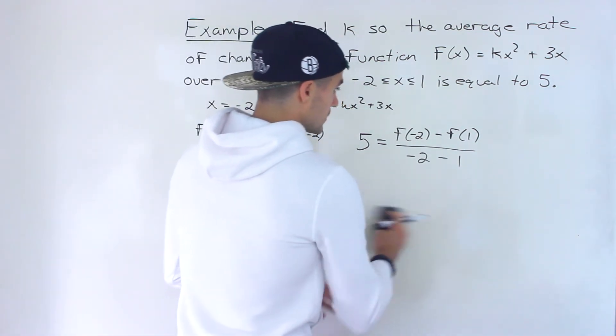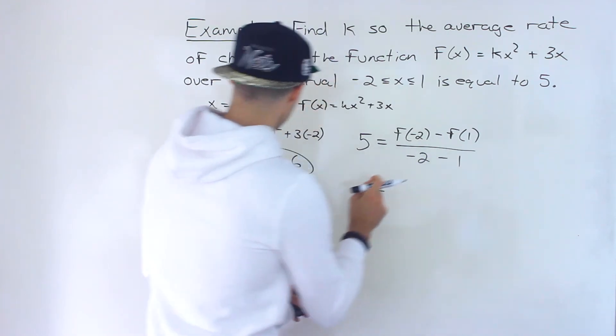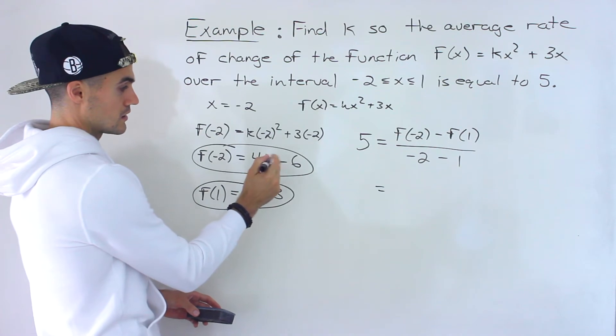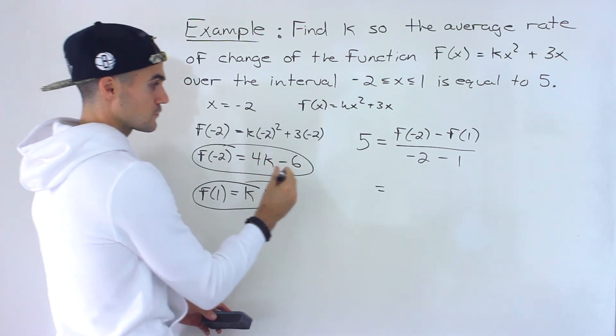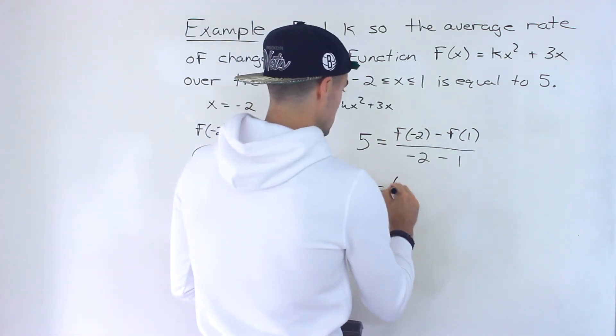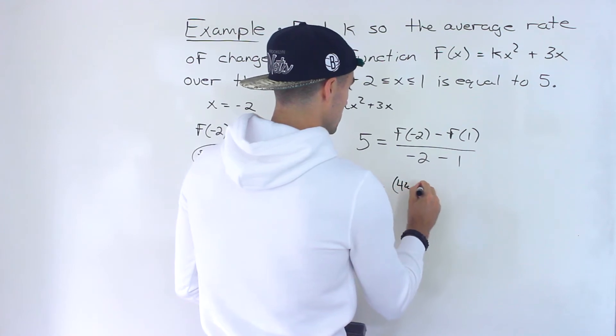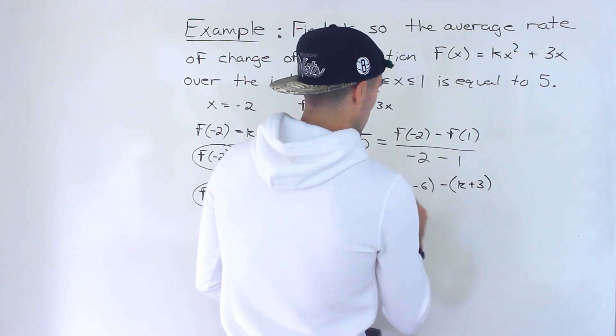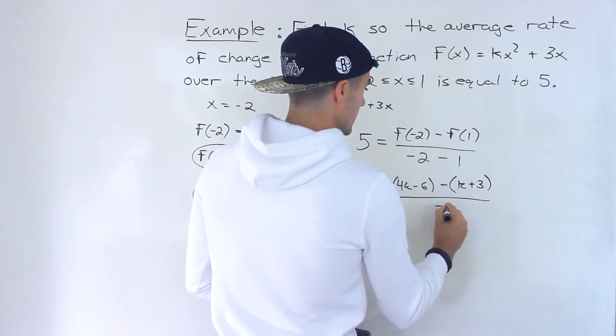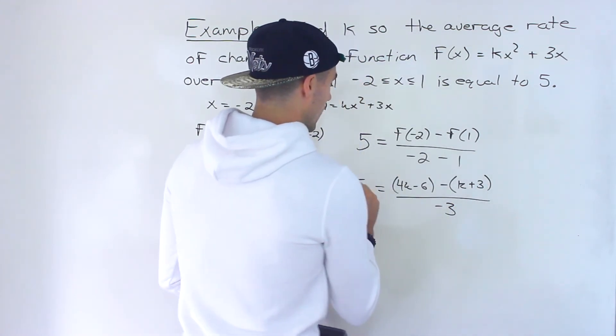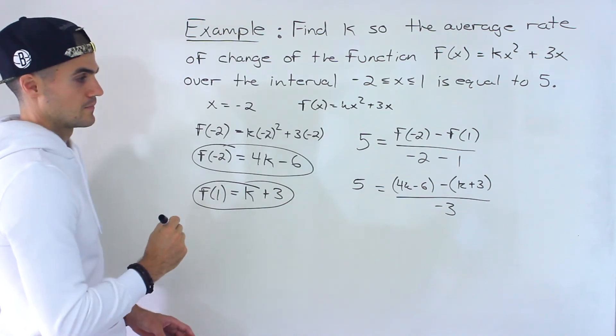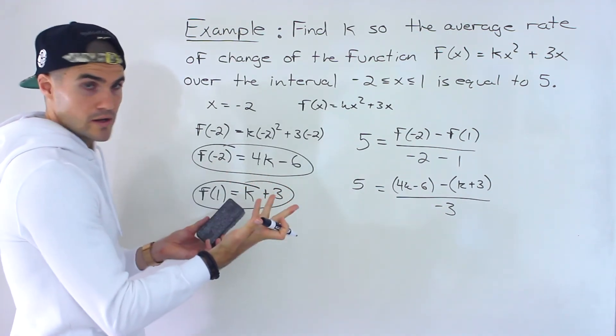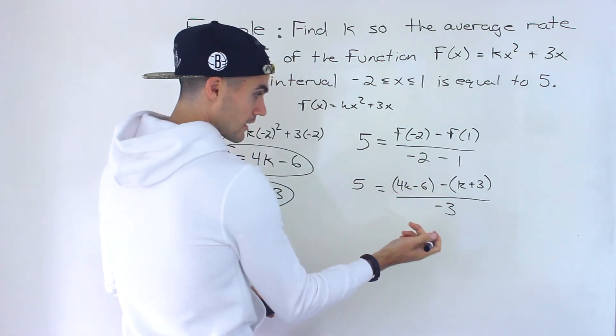From here, we can plug in f(negative 2), the expression for that, which is 4k minus 6. So we'll have 4k minus 6 minus f(1), which is k plus 3, all over negative 2 minus 1, which is negative 3. And then we'll have 5.